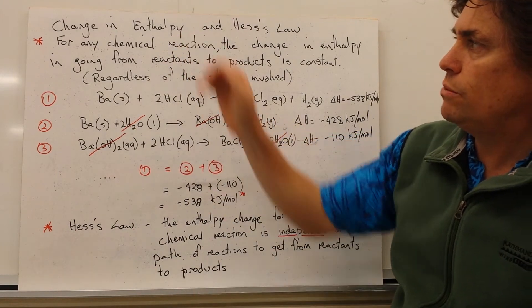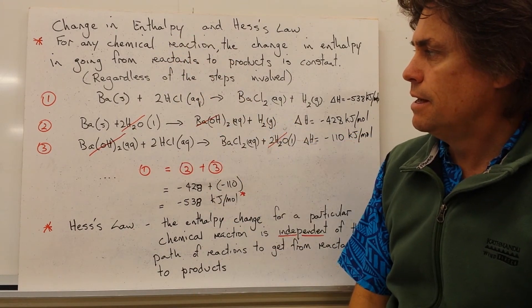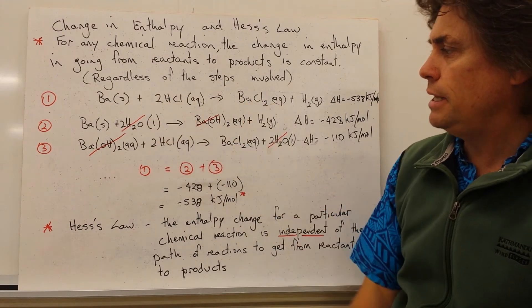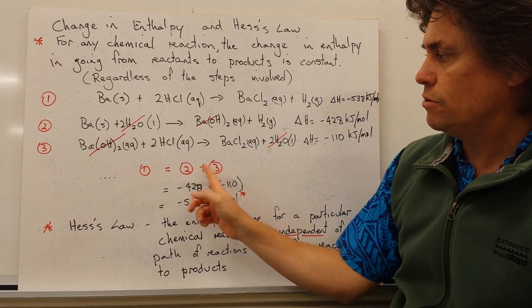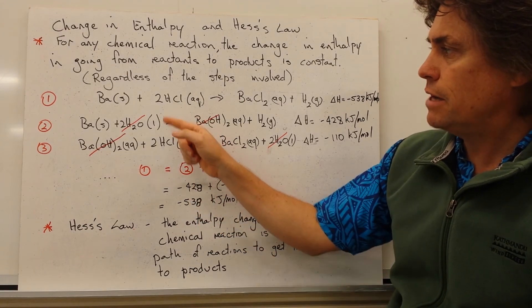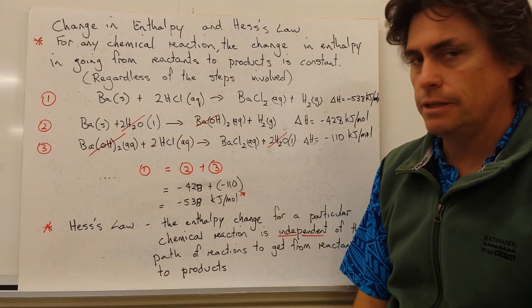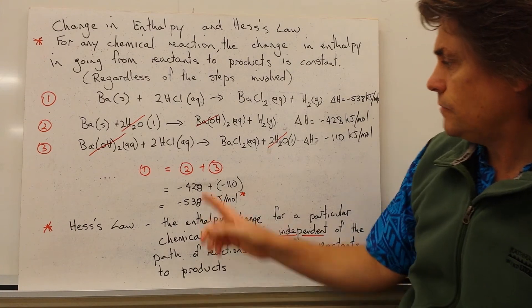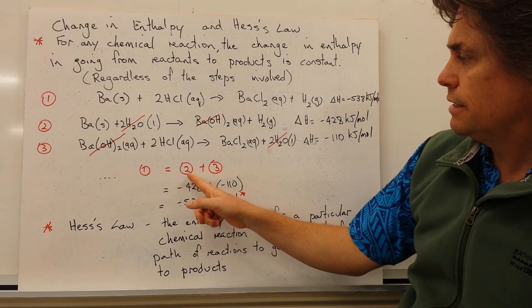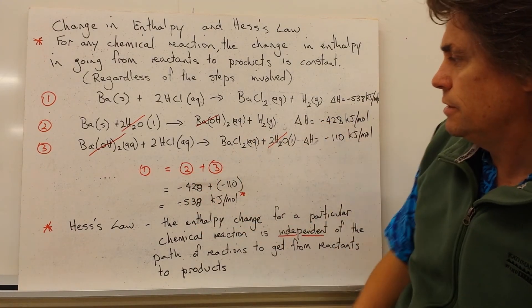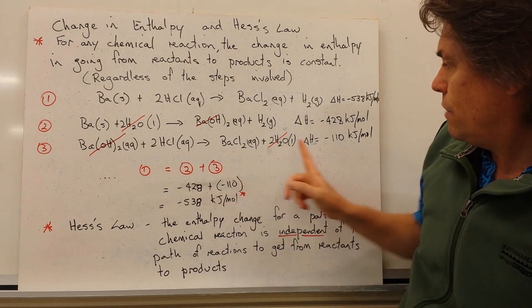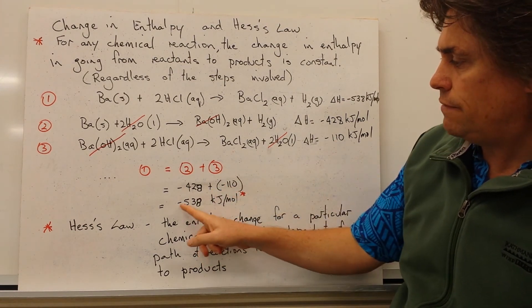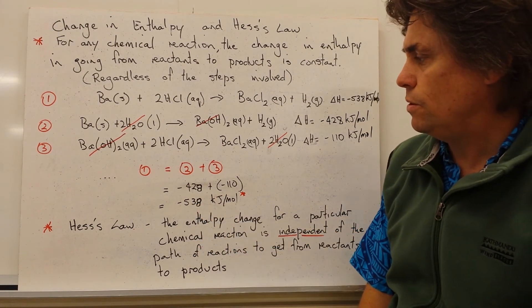Now according to what we set up the top here, our change in enthalpy for the complete reaction should equal the change in enthalpy when we add them together for our sequence of reactions. Let's see if this is the case. We get minus 428 kilojoules per mole for the second reaction. And we add that to the minus 110 for our third reaction. And we get the value of minus 538 kilojoules per mole.